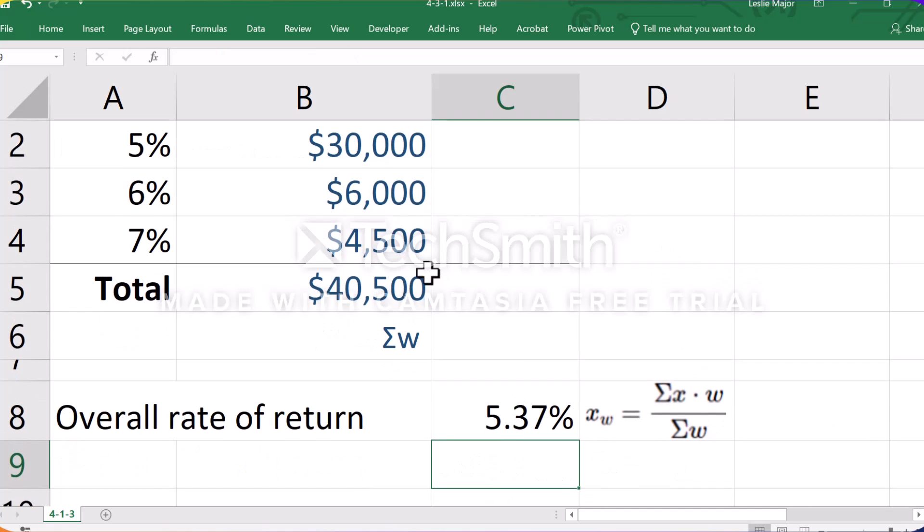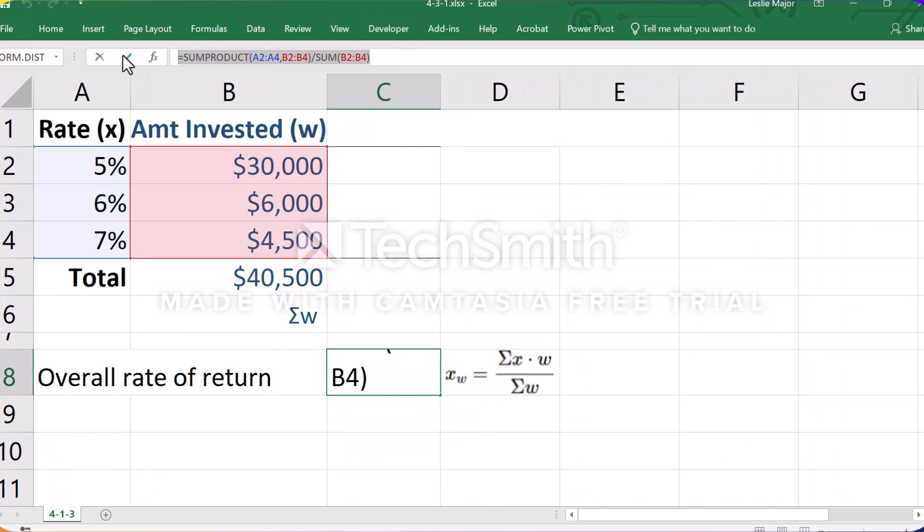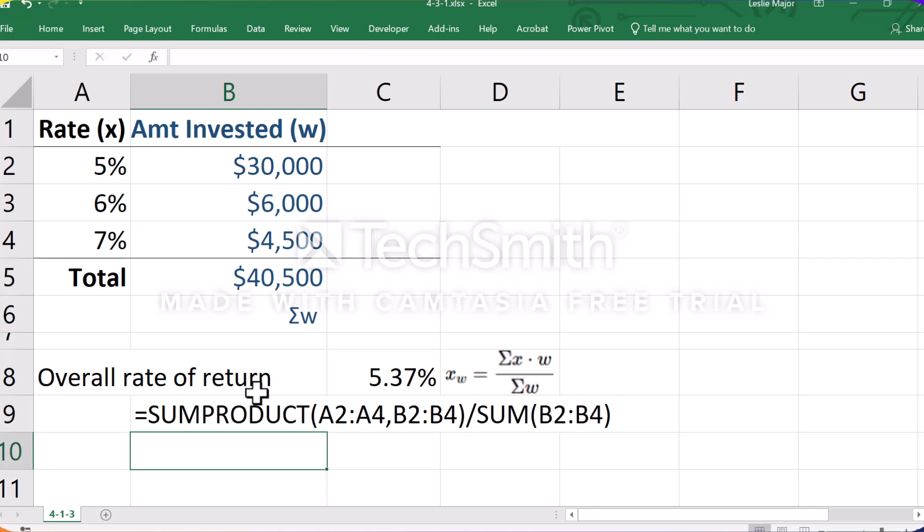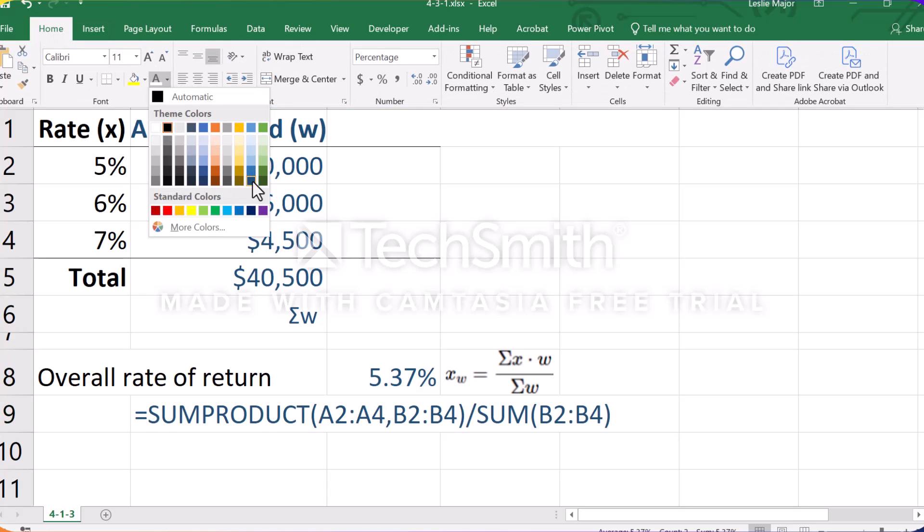And that will give the same value here. Let me just display that equation. So that's this guy here. That gets you this dollar amount. If you just use a SUMPRODUCT, it's a little bit quicker.